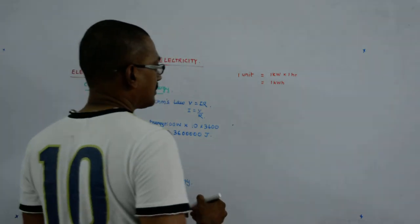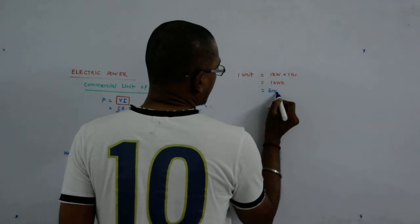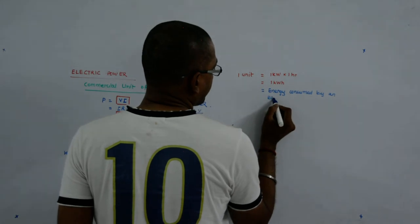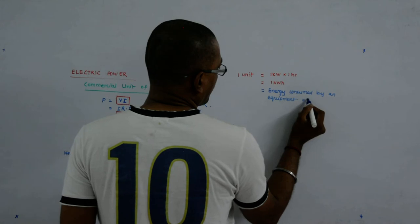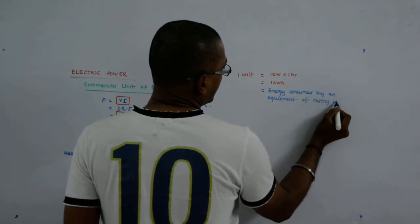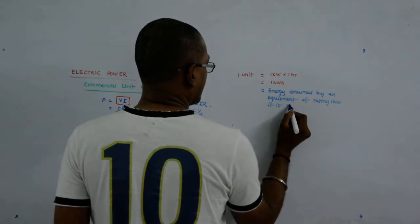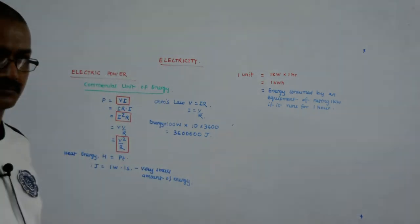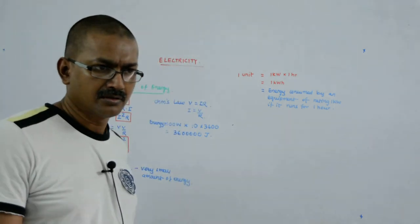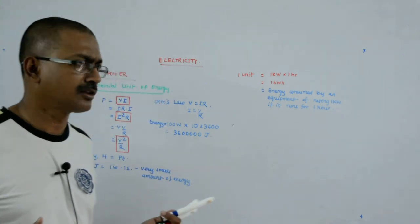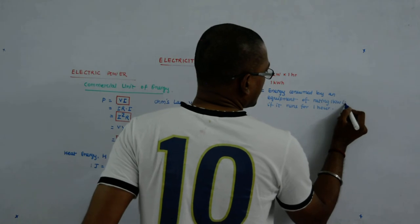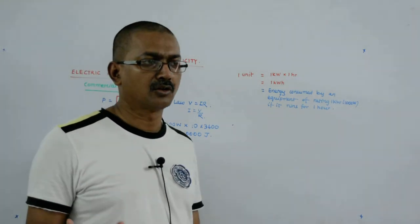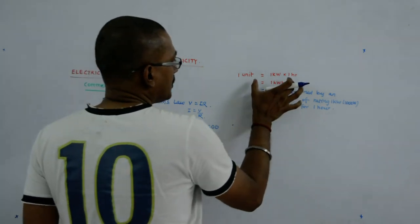It means how much energy? This is equal to the energy consumed by an equipment operating one kilowatt if it runs for one hour. Typically an iron that you use at home is either 750 watts or one kilowatt. One kilowatt is one thousand watts. So if an equipment rated one kilowatt you run for one hour, the amount of energy that you consume is one kilowatt hour.